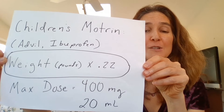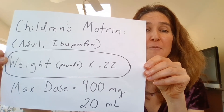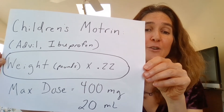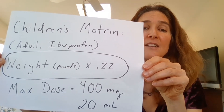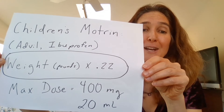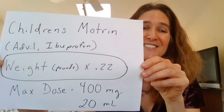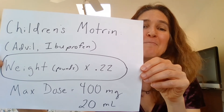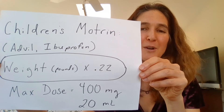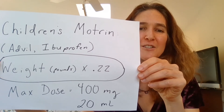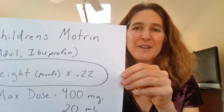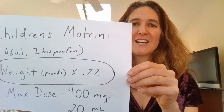The maximum dose of Motrin for an adult-sized person is about 400 milligrams. If you were administering this as a liquid, that would be 20 mLs. So if you calculate 25 mLs, you know you're in the wrong ballpark. To recap: take your child's weight in pounds, multiply times 0.22, and that gives you the dose of children's Motrin. Motrin is given every six to eight hours, but less is more — give the minimum dose that gets the job done.